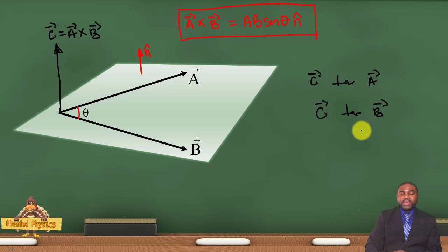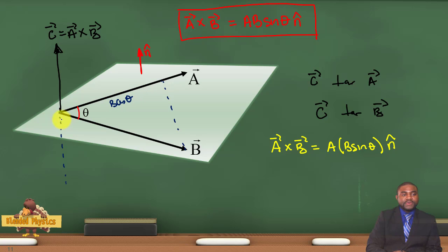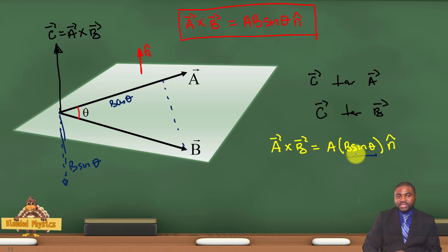If you look at this keenly, you will notice that A cross B is the same as A times B sine theta N. Now the vector B can be resolved into two components. You have a component—this will be B cosine theta and this will be B sine theta. So geometrically, the vector product between A and B is the magnitude of A multiplied by the perpendicular component of B with respect to A.